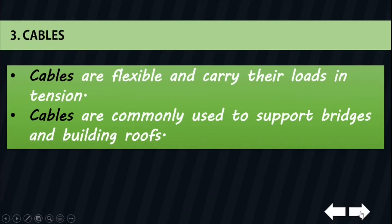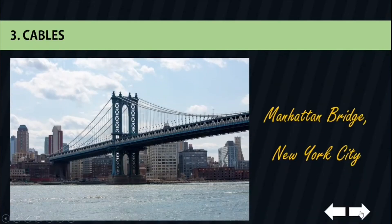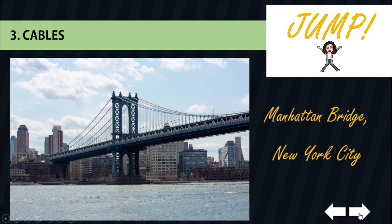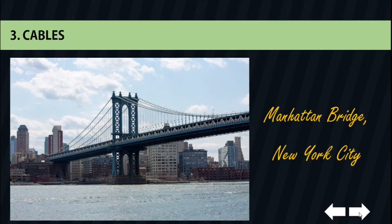When used as bridge support, cables have an advantage over the beam and the truss, especially for spans greater than 150 feet or 46 meters. A great example is the Manhattan Bridge over New York's East River. This bridge was opened in 1909, one of the first major bridges to use steel towers. It used more flexible towers and a shallower stiffening truss.